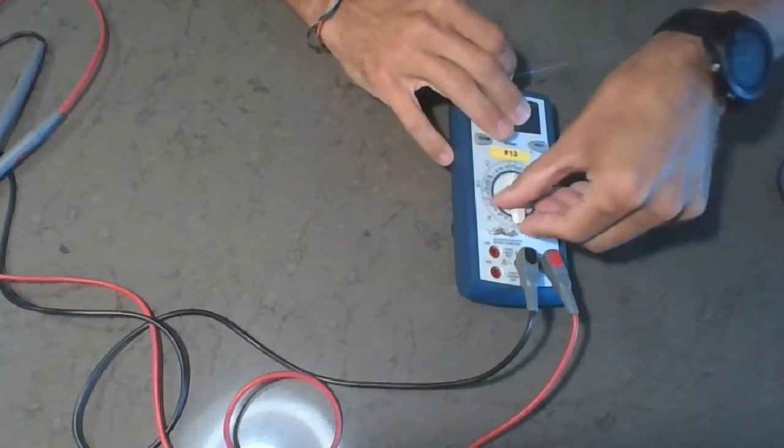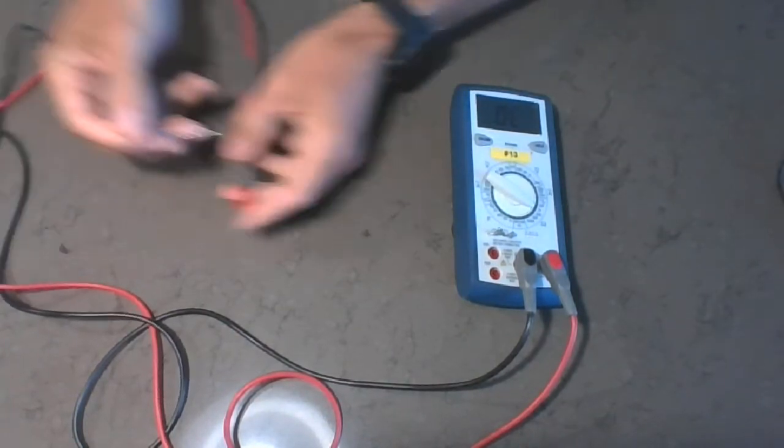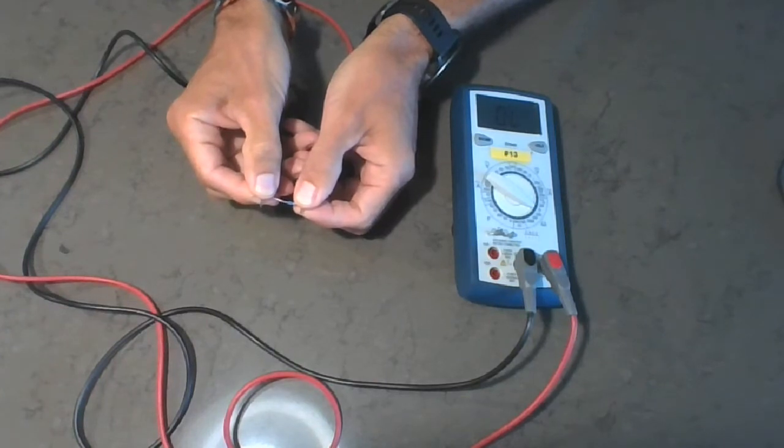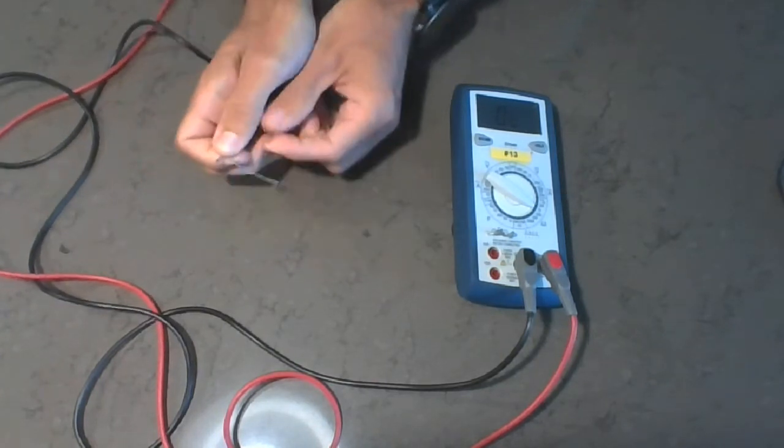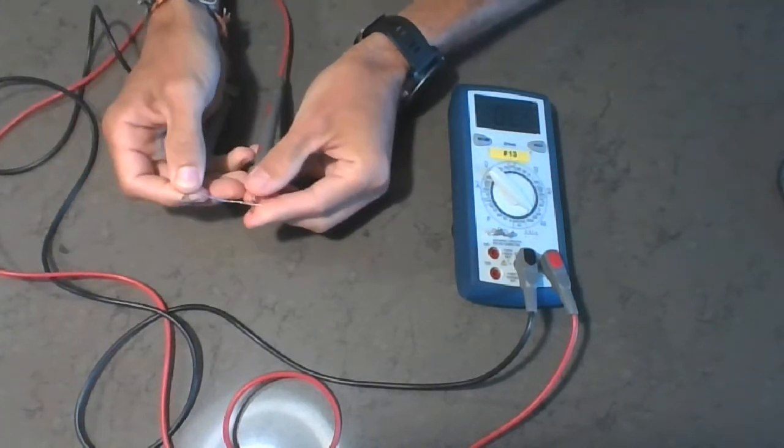you're going to use the multimeter. If you have no clue what you're measuring, you can start at one scale, like I'm at 2K right now. I'm going to be holding the resistance. Now if I have overload, it means the resistance I'm holding is probably higher than 2,000 ohms. You can go up to the next scale.